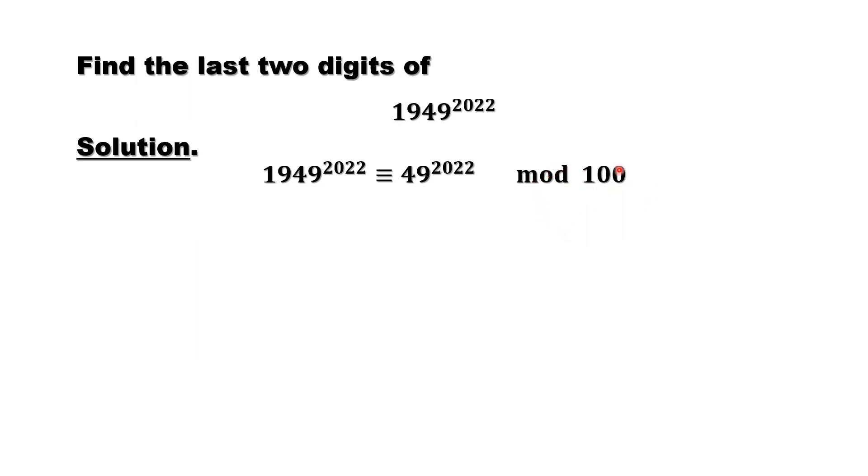Then we have 2, 3, 4 until 99. 99 means the last two digits of this given number are 99.